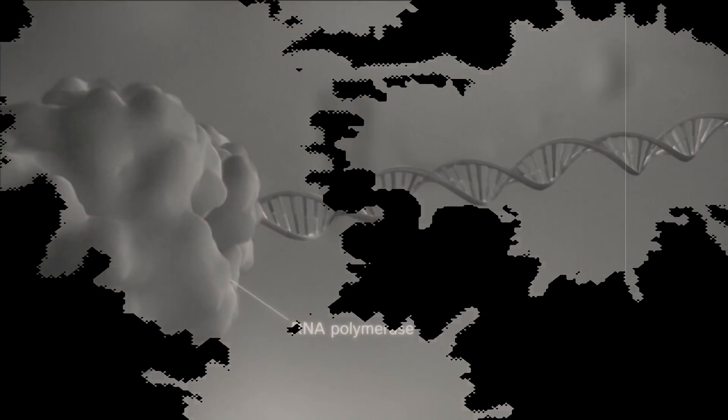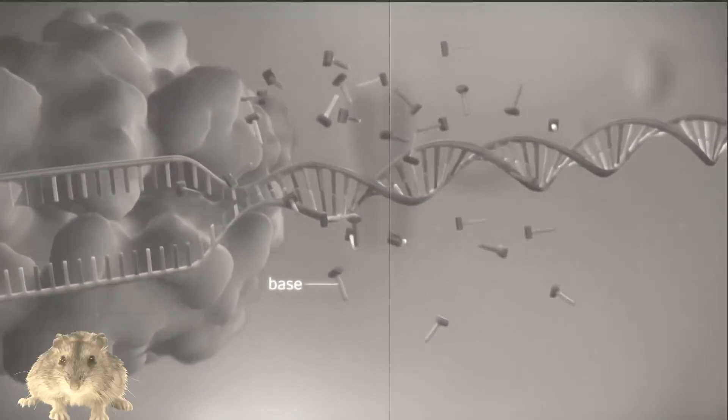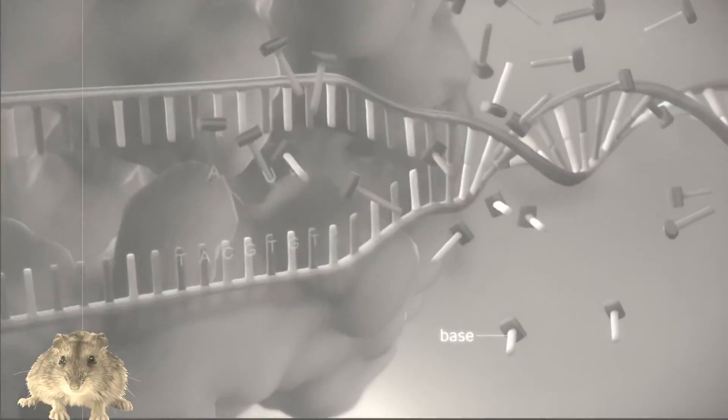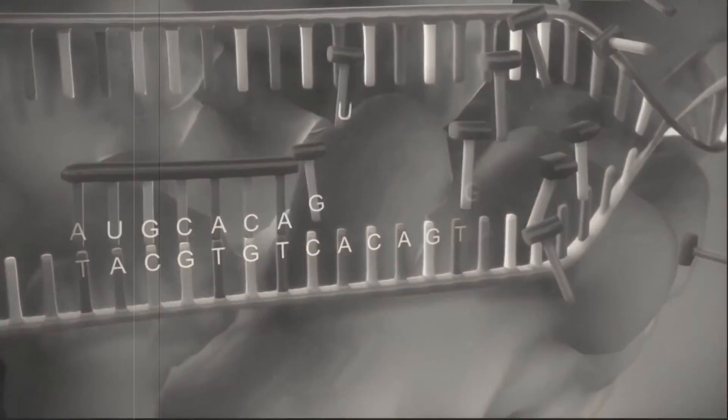During the test, they learned that mice can pass on learned information about traumatic and stressful experiences. In this case, a fear of the smell of cherry blossom to subsequent generations.